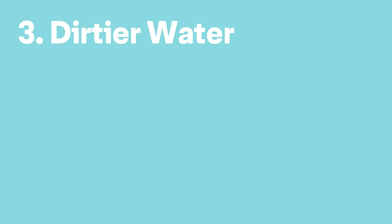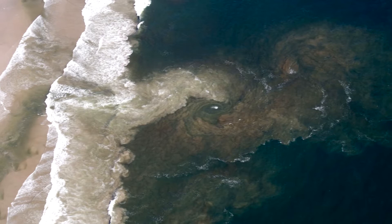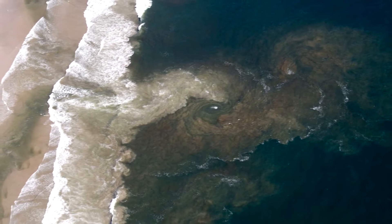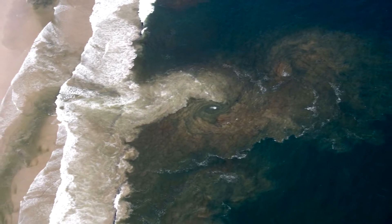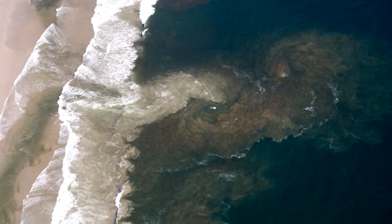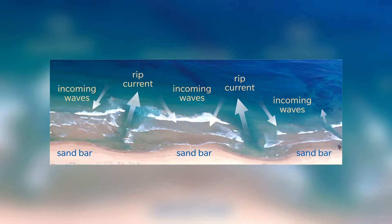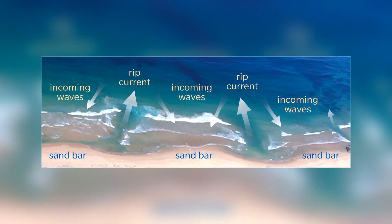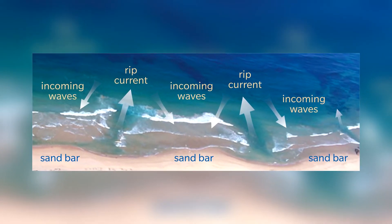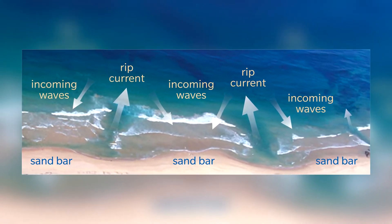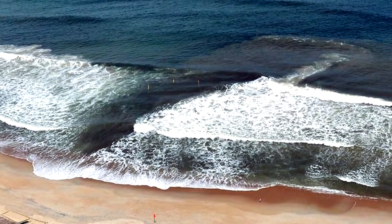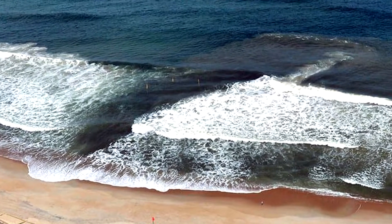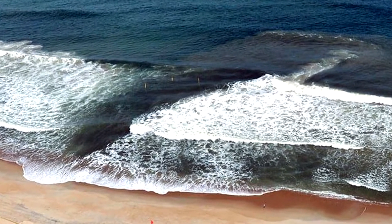Number 3: Dirtier Water. Just as breaking waves push sands and debris onto the beach, the rip current drags sand and debris from the shore as it returns to the sea. This means that the rip current will appear clouded with sand or have foam, seaweed or other debris on its surface.